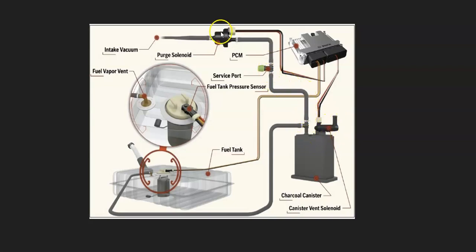A hose leaves the charcoal canister and goes up to the top of the engine to what's called a purge valve. This purge valve basically opens when the engine's running so all the gas vapors go in and get burned off, and then it closes when the engine's not running so they don't escape. There's also a fuel tank pressure sensor, usually located on the fuel pump, and this is what the onboard computer uses to monitor the whole system.